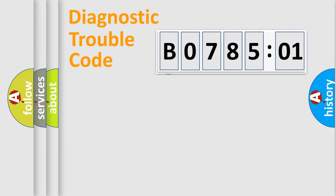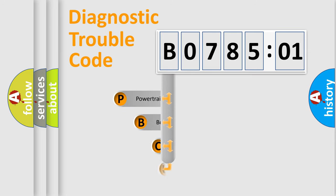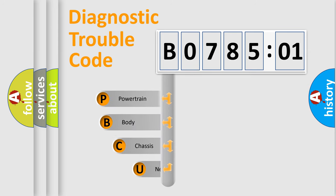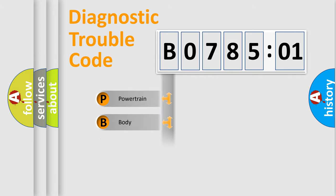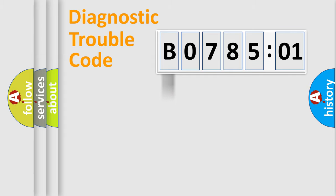First, let's look at the history of diagnostic fault code composition according to the OBD2 protocol, which is unified for all automakers since 2000. We divide the electric system of automobile into the four basic units: Powertrain, Body, Chassis, Network.